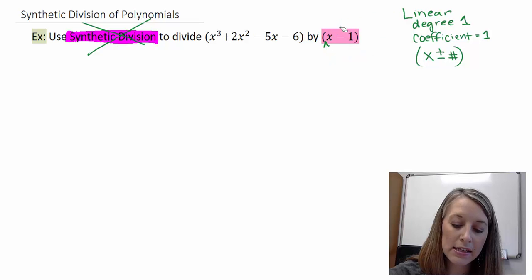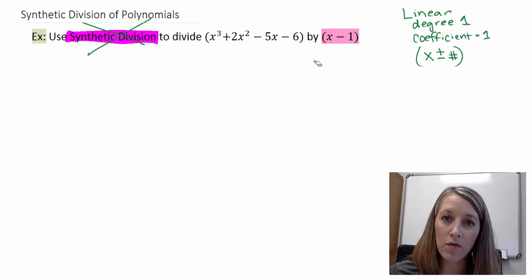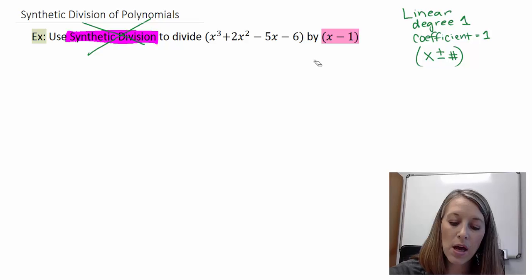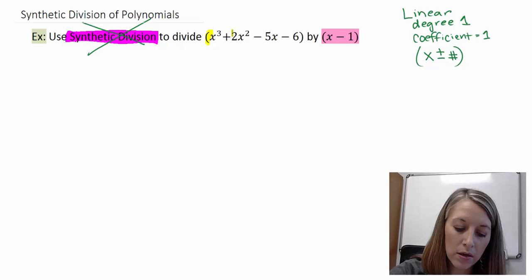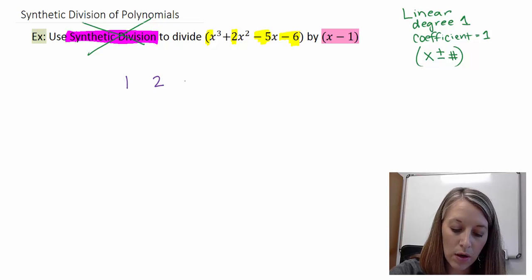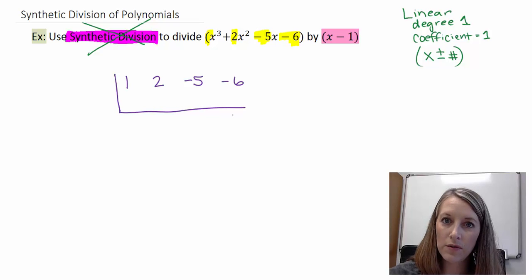I said that it's a condensed version of long division, and so basically, we take out all of the variables and we only focus on the numbers. I'm only going to focus on my coefficients. So my coefficient here was 1, and then 2, and then negative 5, and then negative 6. So those are the numbers that I'm going to write down: 1, 2, negative 5, negative 6. I'm going to draw my box a little bit different than the long division, but that's a minor detail.